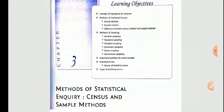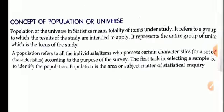Now we will study about the method of statistical inquiry. In this chapter we will study the concept of population and universe, what inquiry is, census and sample methods, types of sampling, qualities of a good sample, and types of errors and how to handle them.